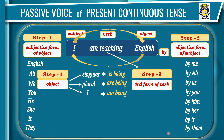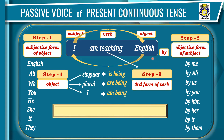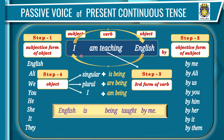Now let's change 'I am teaching English' into passive voice following four steps. Step one: write 'English' at the beginning. Step two: write 'by me'. Step three: third form of 'teaching' is 'taught' — 'English taught by me'. Step four: 'English' is singular so write 'is being' — the passive voice is 'English is being taught by me'. To make it negative, write 'not' after the helping verb: 'English is not being taught by me'.